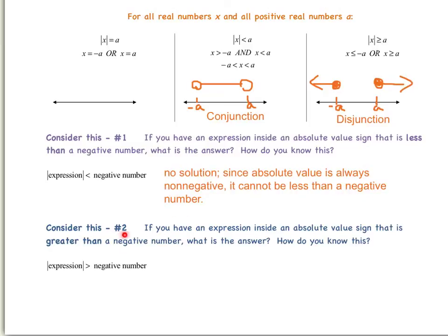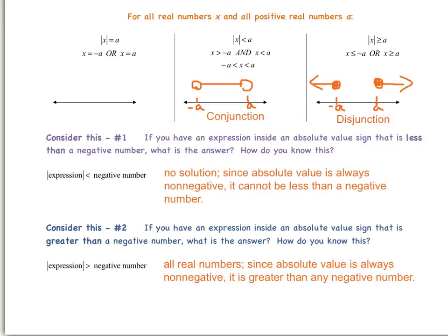Now let's look at our second special case. If you have an expression inside an absolute value sign that is greater than a negative number, what is the answer? Again, we have our expression in the absolute value bars, and if it's greater than a negative number, the answer is all real numbers. This is because absolute value is always non-negative, so therefore it is greater than any negative number.